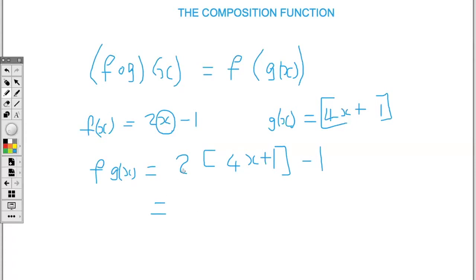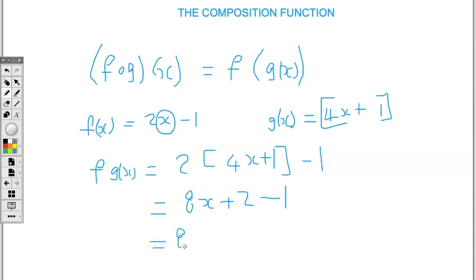take away 1. So I replace the x with 4x plus 1. Then simplified, we expand the brackets. So I have 4 times 2, that's 8x. 2 times 1, that's 2, take away 1. So we have 8x plus 1.